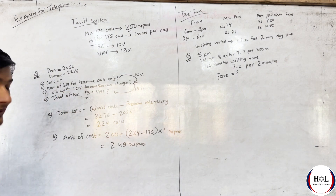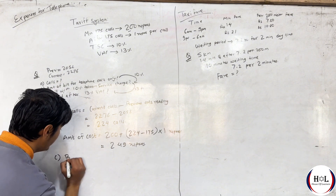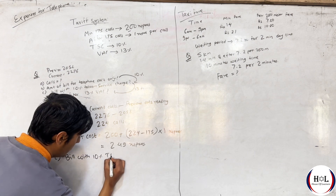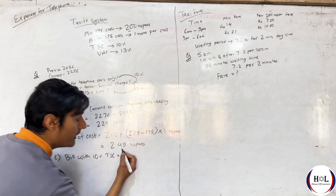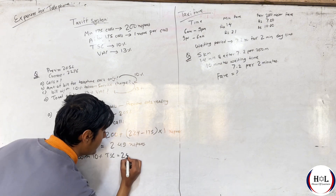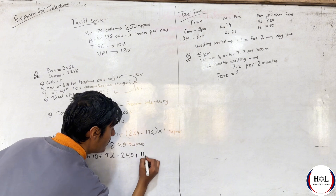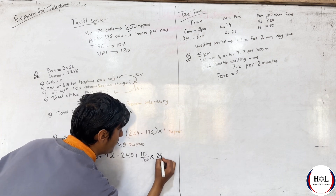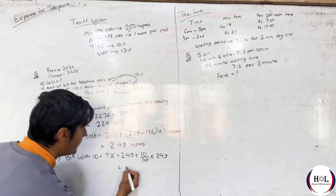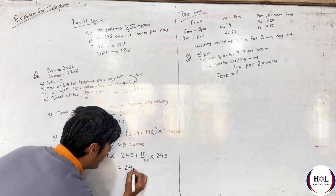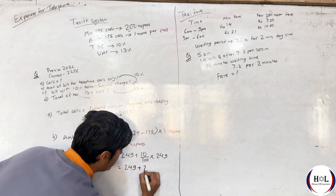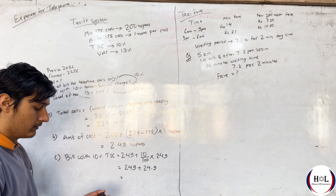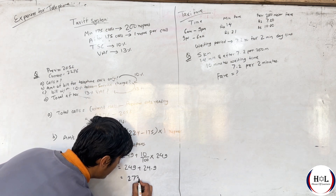Bill with 10% Telecom Service Charge. I have a bill with 10% TSC. 10 upon 100 into 249. So now 249 plus 24.9 equals 273.9 rupees.